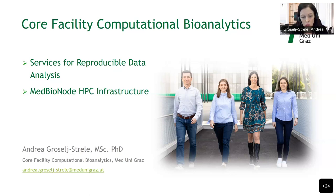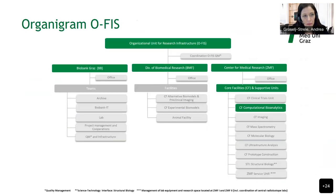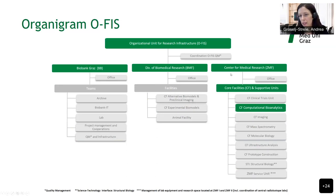Later on, Maria will give you a live demonstration to see how Galaxy is working at the Medical University Graz. I would like to start by briefly explaining where the core facility Computational Bioanalytics is situated in the Medical University Graz. The Organizational Unit for Research Infrastructure has three departments: Biobank Graz, Division of Biomedical Research, and Center for Medical Research.